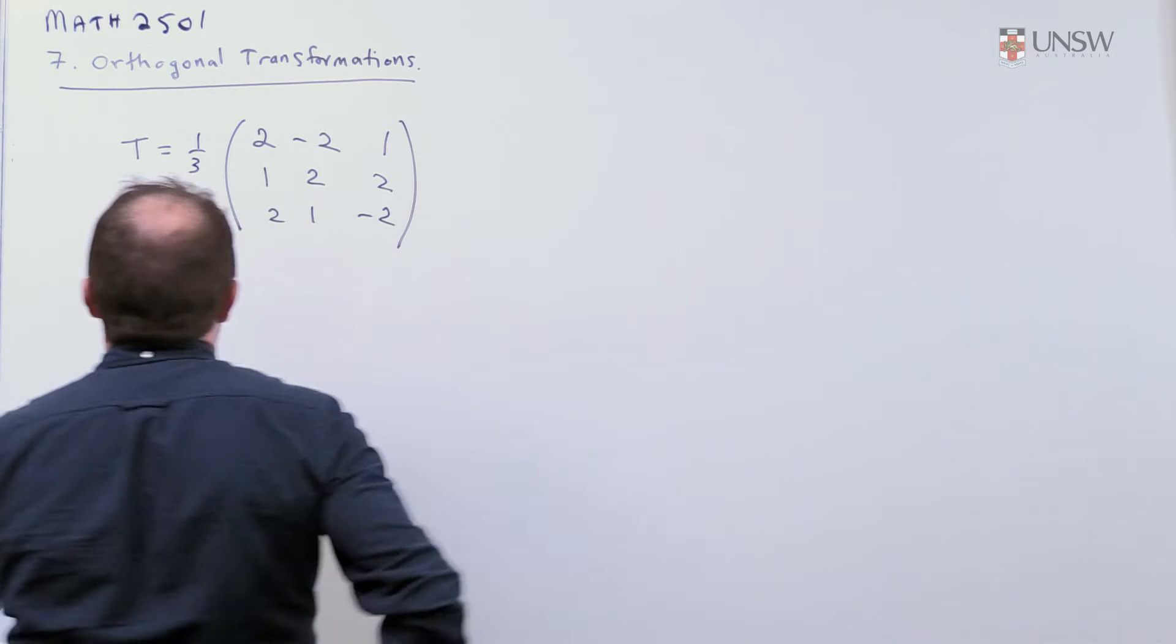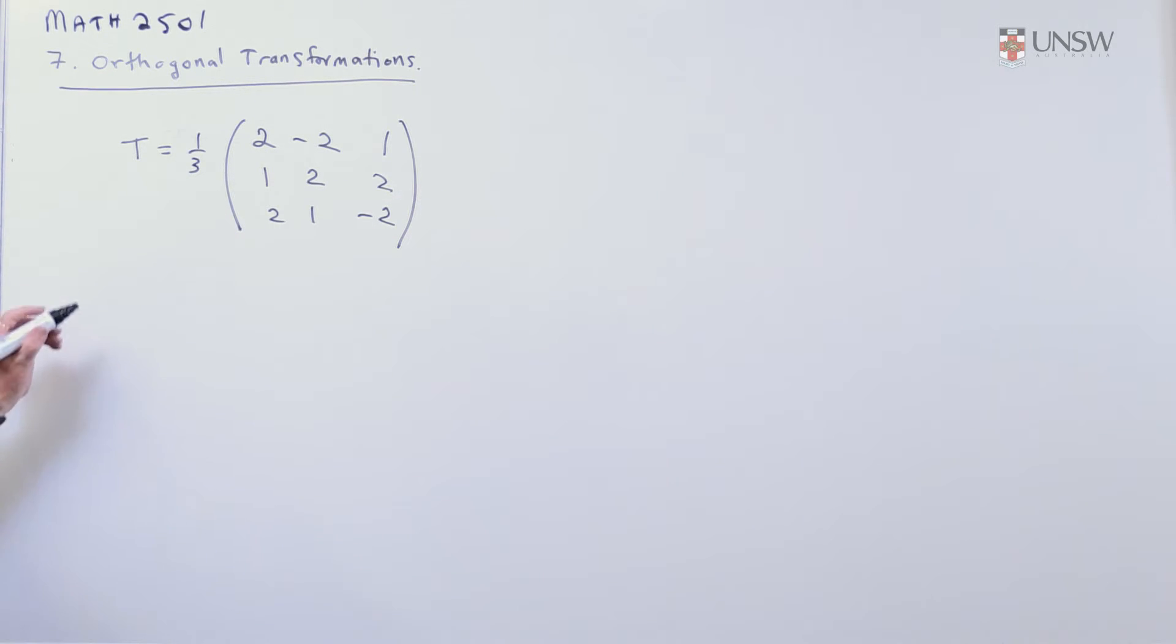For the first part we have some nice theorems. We have to check that if I work out T transpose times T, I'm going to show that we get the identity matrix and that tells us it's an orthogonal matrix.